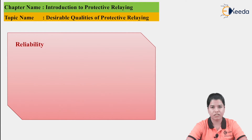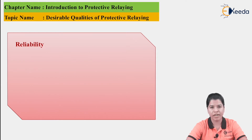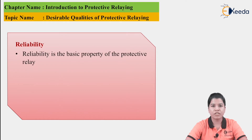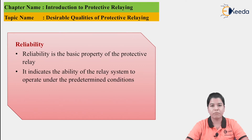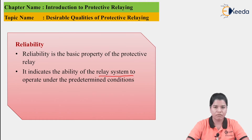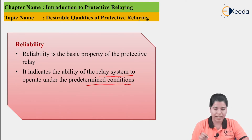First is Reliability. The name itself suggests how reliable a protective relay is. The relay should be reliable enough to operate under fault conditions. Reliability is the basic property of the protective relay — it basically indicates the ability of the protective relay system to operate under predetermined conditions.